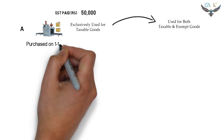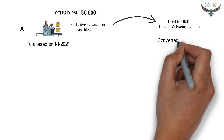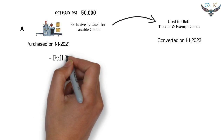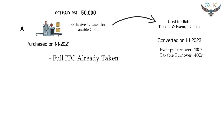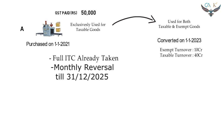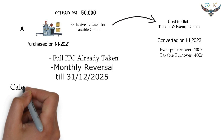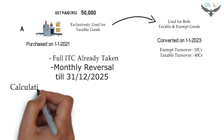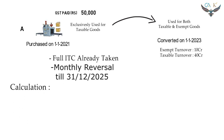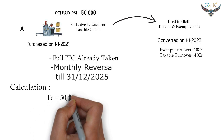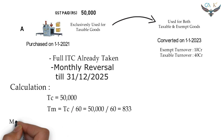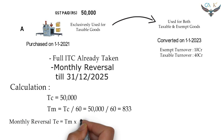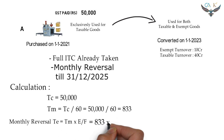Let us assume Machine A was purchased on 1st January 2021 and the conversion took place on 1st January 2023. Since the machinery was previously used for taxable goods, the full ITC was already taken. Since it is now used for common purpose, we have to calculate the monthly reversals. We need to find TC, TM, and finally TE. TC is the GST paid on the common capital asset. TM = TC ÷ 60. The monthly reversal TE = TM × (exempt turnover ÷ total turnover).